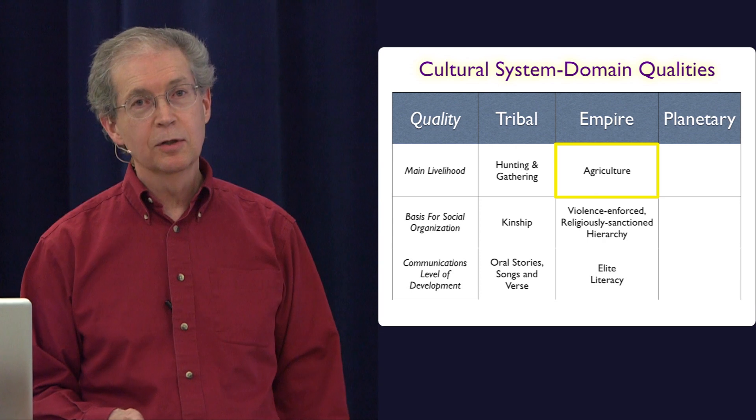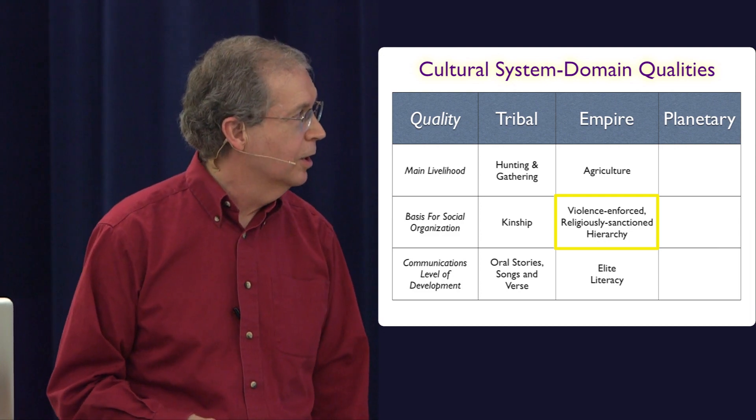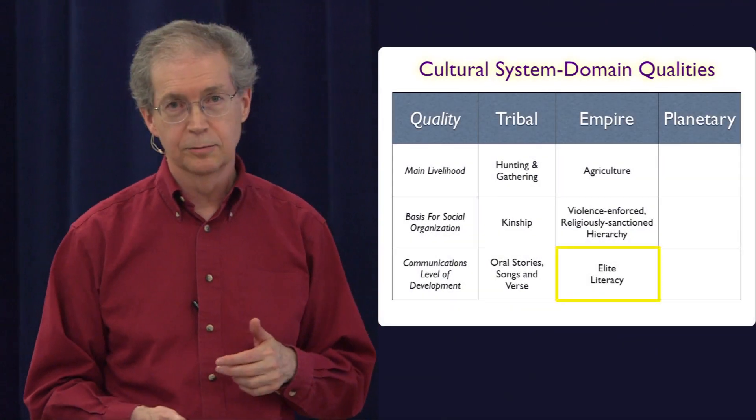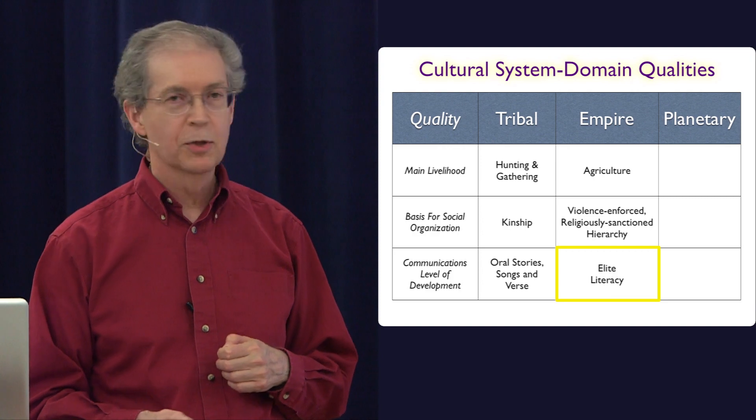In the empire era, the main livelihood is agriculture. And the basis for social organization in the empire period is violence-enforced, religiously-sanctioned hierarchy. Now, I don't mean to beat up on religion in that, because religion is a very broad concept that comes in all kinds of different ways. But the important thing is that in every one of these empires, there was always some religion there that provided the justification for why it was that they had the hierarchy that they did. And so you had the soldiers and the priests operating from two different directions, making sure that the hierarchy stayed in place. And it contributed a certain amount of social stability and other things, but it's essentially the way it worked. And then elite literacy.